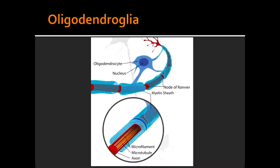What autoimmune disease destroys the oligodendroglia? The autoimmune disease that causes destruction of oligodendroglia is multiple sclerosis. How does oligodendroglia appear under H&E stain? Oligodendroglia looks like a fried egg on H&E stain.